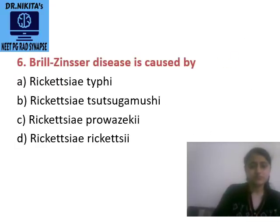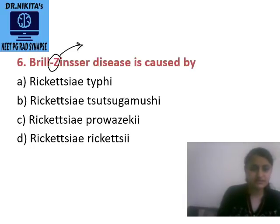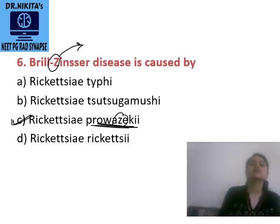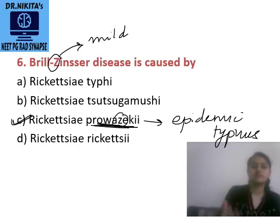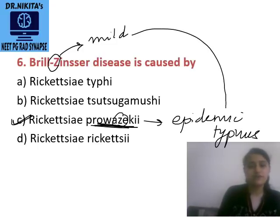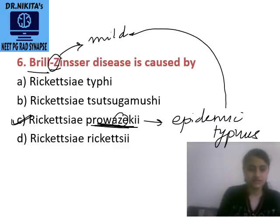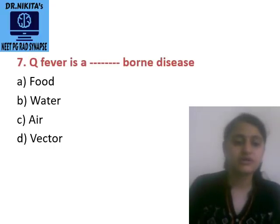Next: Brill-Zinsser disease is caused by? The mnemonic is that Brill-Zinsser has a Z, and the only Rickettsia with Z in its spelling is Provazekii. So Brill-Zinsser is caused by Rickettsia prowazekii. It is the mild recrudescent form of epidemic typhus — after years, a patient who had epidemic typhus can get this mild recurrent form, called Brill-Zinsser disease.